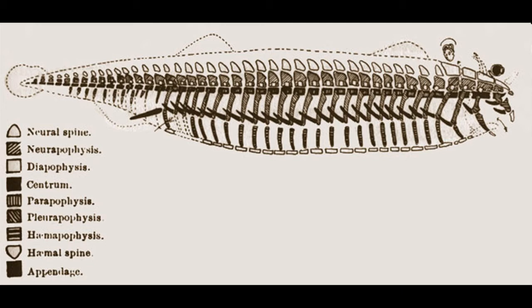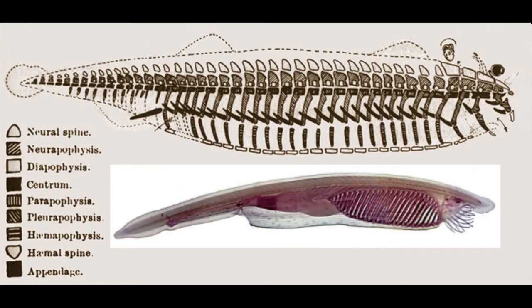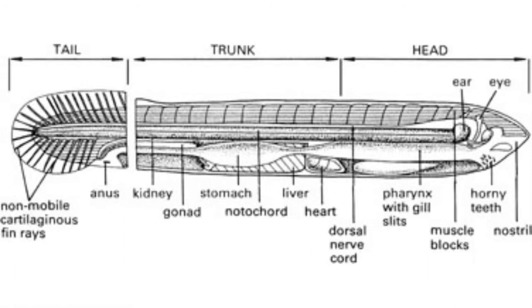If we look at Owen's archetype of vertebrates, we see a familiar creature in many ways. It resembles amphioxus, with a notochord, segmented muscles, a gut tube with a stomach, and gills, but with the addition of a heart, expanded brain, eyes, and a more expanded tail.